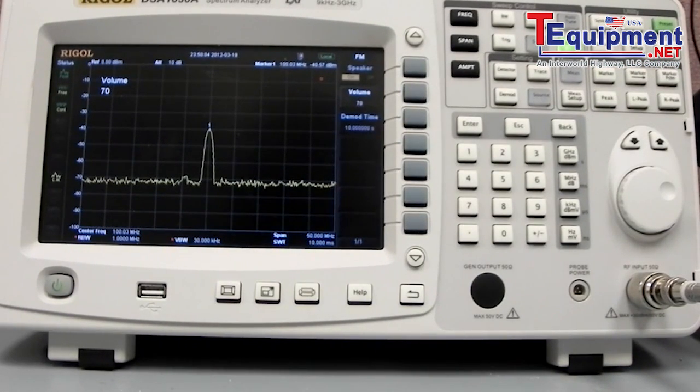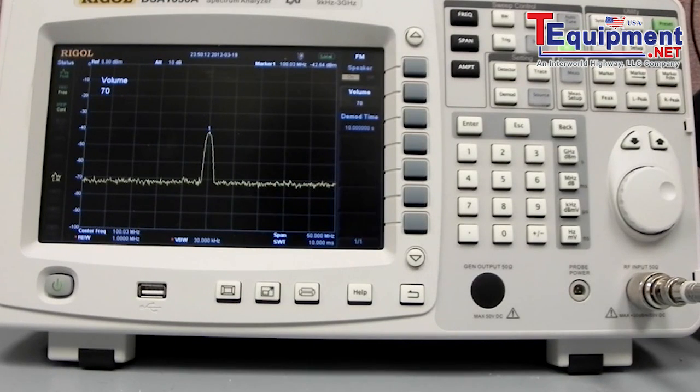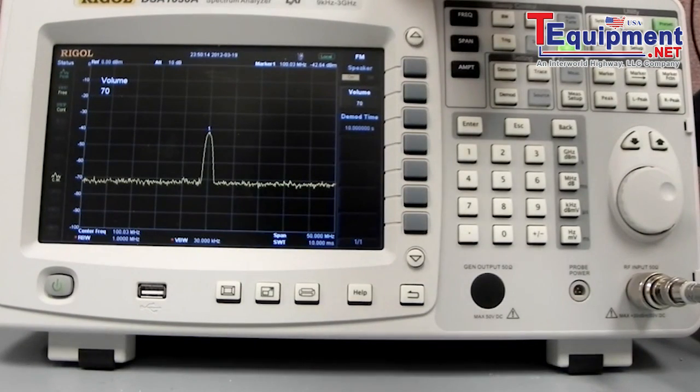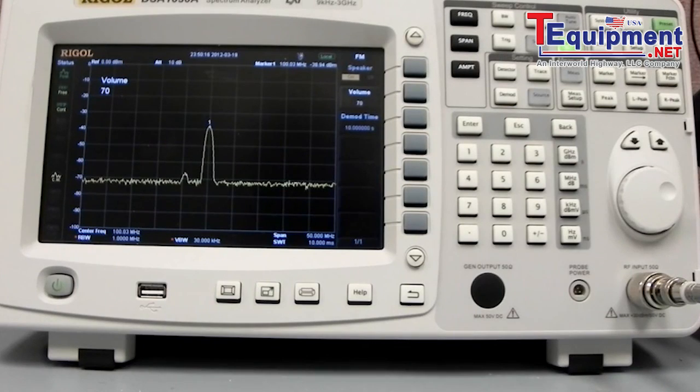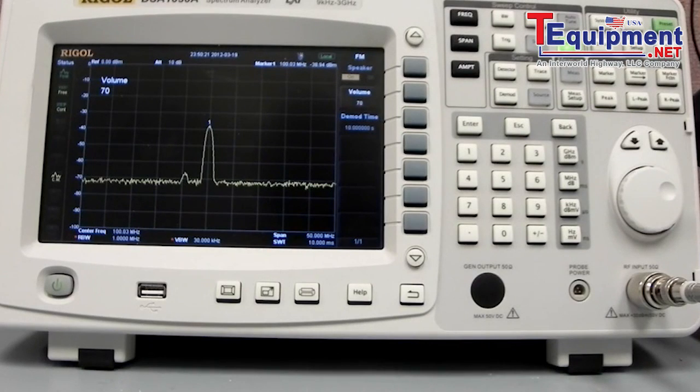And you can hear Bob Dylan in the background. The cell phone, or that music, that audio file, is now modulating that FM output for the DG-4000. It's being transmitted to the spectrum analyzer, demodulated in the spectrum analyzer, and then we're also playing it back out through the speaker. So it's a nice little demonstration of RF transmission, a little bit about FM and FM demodulation, and a pretty easy demo to do at home.